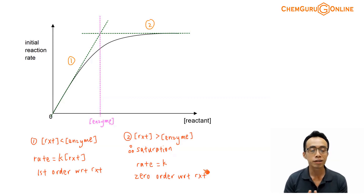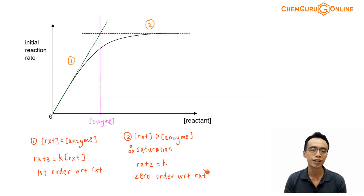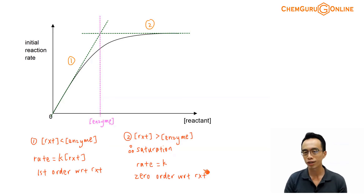So that was the discussion involving the rate concentration graph of an enzyme-catalyzed reaction. Keep in mind that even though it looks like a smooth curve, it is made up of a combination of two graphs: the first portion, where it is first order with respect to the reactant, and the second portion, where it is zero order with respect to the reactant. If you've learned something useful from this video, please give me the thumbs up, like this video, and subscribe to my YouTube channel for more weekly video lessons. That's all for now — I'll see you next week.